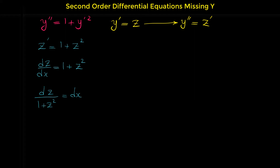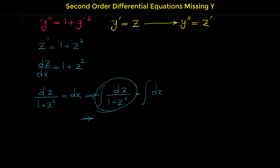For solving separable differential equations, we simply integrate both sides of the equation. So we have the integral of dz over (1 plus z squared) equals the integral of dx. We know from integral formulas that the integral of dz over (1 plus z squared) is the inverse tangent of z, and the integral of dx is x. Don't forget to add a constant — we add c1 to the right side.